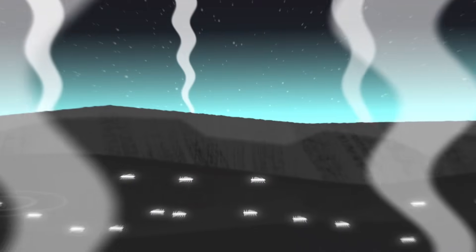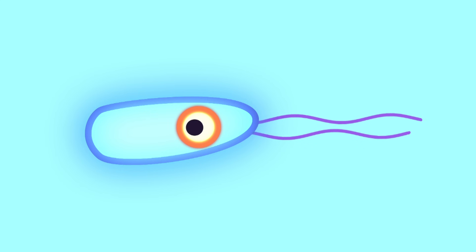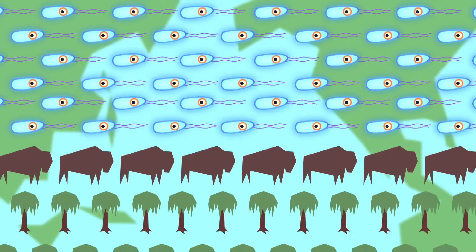Microorganisms called bacteria were some of the first life forms to appear on Earth. Though they consist of only a single cell, their total biomass is greater than that of all plants and animals combined.